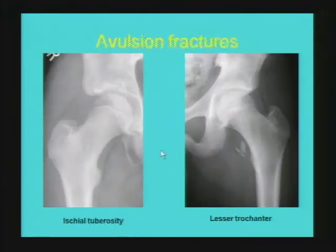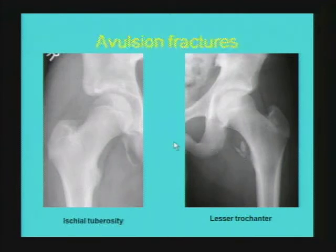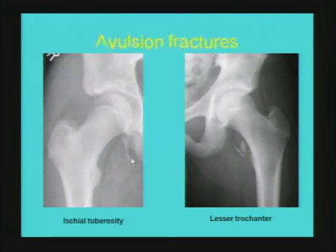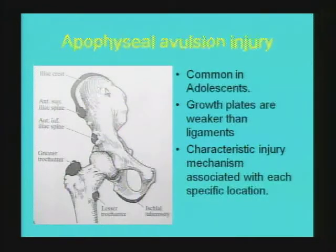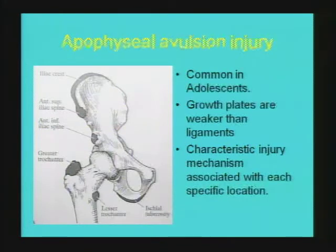Avulsion fractures are a specific pattern seen in the adolescent population. Examples include avulsion of the ischial tuberosity and the lesser trochanter. As growth plates are the weakest structure in the pediatric skeleton, a hamstring injury that would cause ligamentous sprain in an adult causes avulsion of the apophysis in adolescents — pathophysiologically a Salter 1 type fracture. Other common sites of avulsion fracture include the anterior superior iliac spine, anterior inferior iliac spine, greater trochanter, and very rarely the iliac crest.